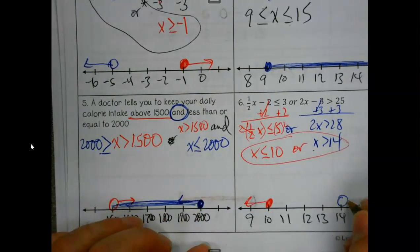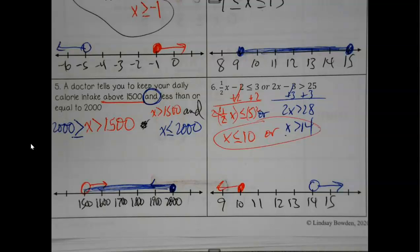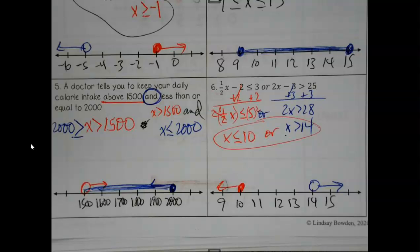Hopefully you paused and tried number six. Use that 'and' or 'or' detail at the beginning to give you a clue what your graph should look like at the end. For the fraction, once you get the one-half alone just multiply by the denominator — that dumps the fraction. It's an 'or,' so the arrows should go in opposite directions, and they do.